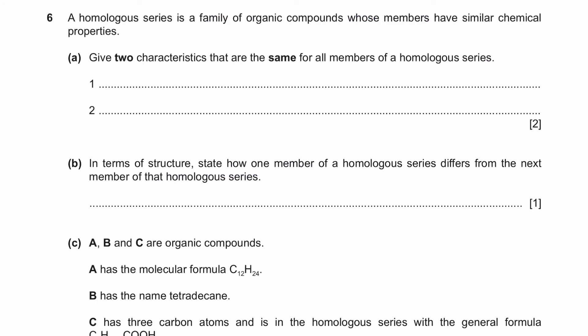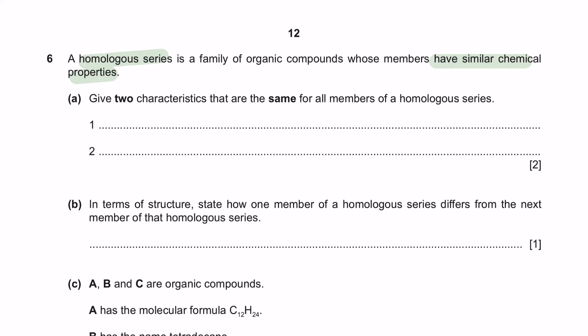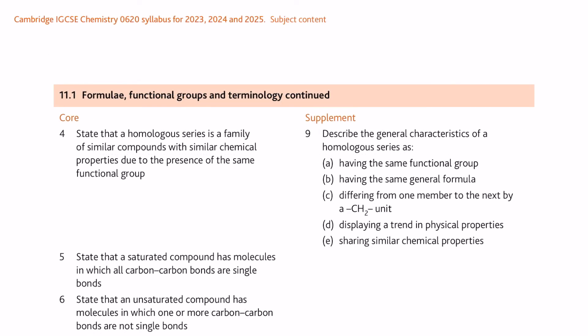Question 6. A homologous series is a family of organic compounds whose members have similar chemical properties. This is a chapter from organic chemistry and some homologous series that you must learn are these four. Make sure you're familiar with them. Now, question A. Give two characteristics that are the same for all the members of a homologous series. All homologous series have the same functional group, same general formula, and share similar chemical properties.